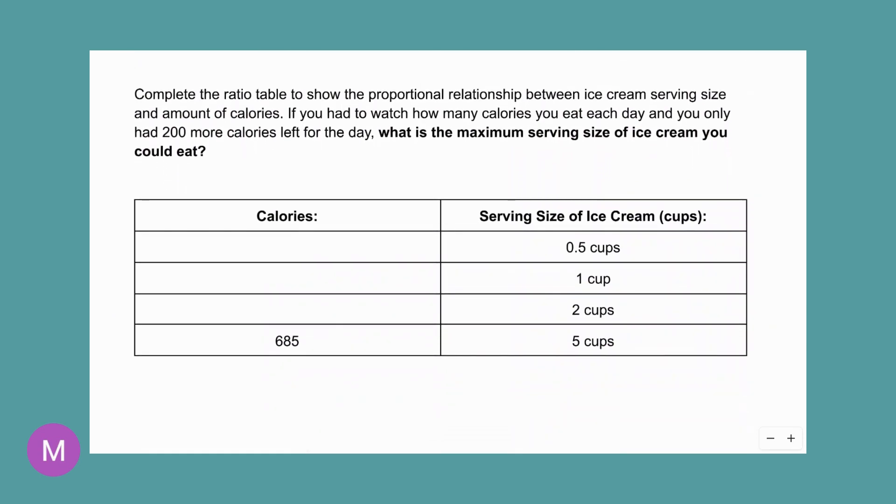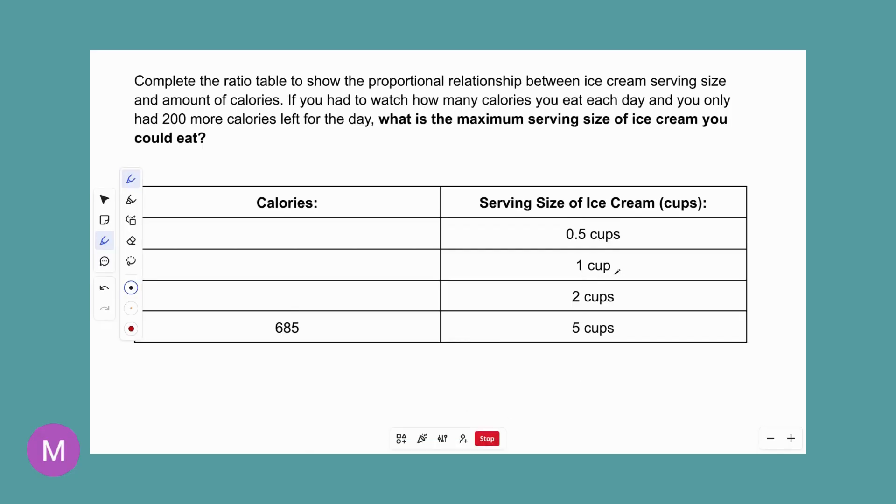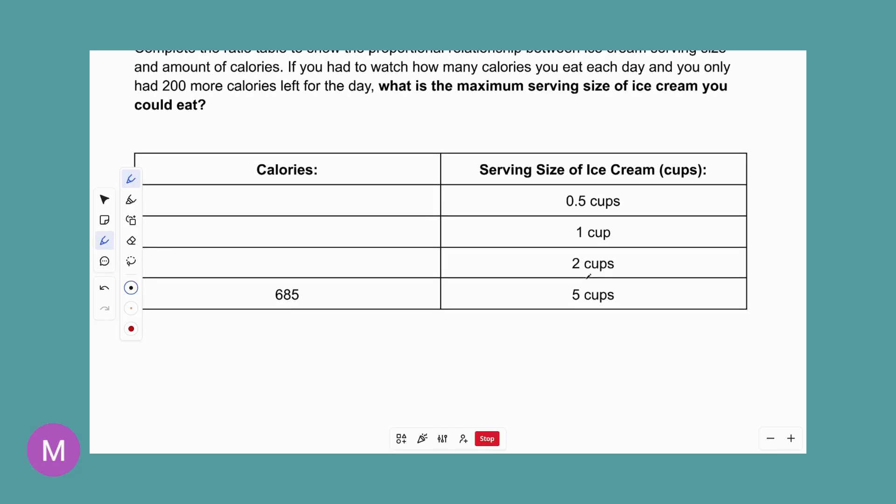So we have someone who's counting their calories. They only have 200 more calories left for the day, but they want to eat the maximum amount of ice cream that they can without going over their 200. So what we're going to do, and in this example, we're not given the per one cup, that nice pretty unit rate that makes it so easy to calculate. So we have to find that first and then work backwards. So this one's going to feel very backwards, but it's the same thing. And then we're going to use our table to answer our question.